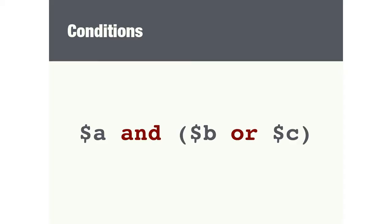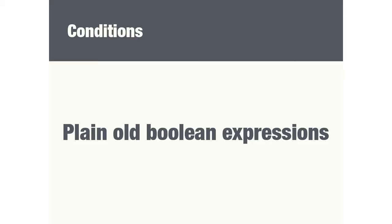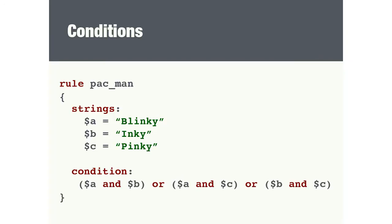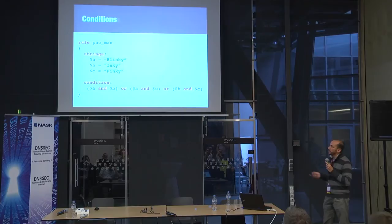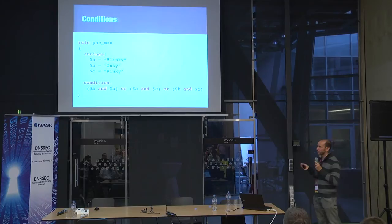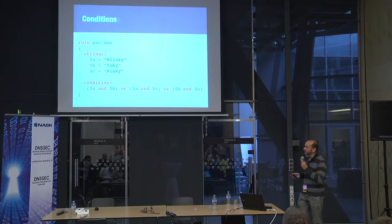In general, any Boolean expression you can construct using the standard Boolean operators — or, and, and not. Suppose that you have three strings and you want at least two of those three strings present in the file, no matter which two, but at least two. You could express that with a condition like A and B, or A and C, or B and C, covering all the combinations. But this doesn't scale — if you start adding strings, your condition will grow a lot. If you have ten strings, your condition becomes huge.